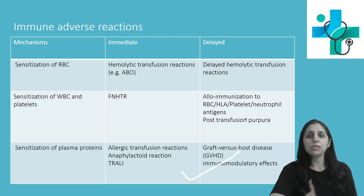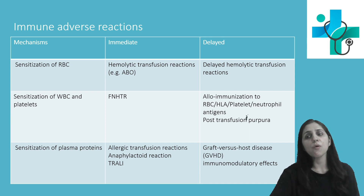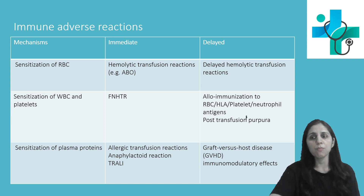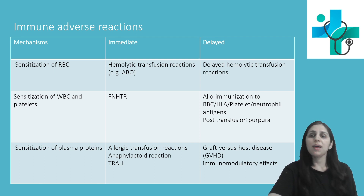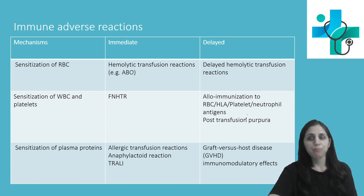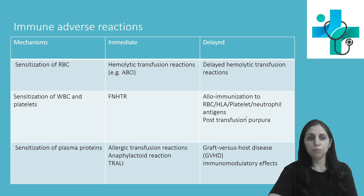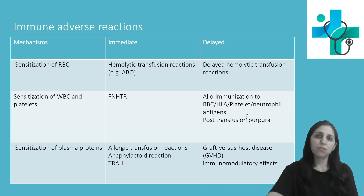Graft versus host disease is rarely seen but is fatal and more commonly seen in immunocompromised recipients. It occurs due to HLA similarity between the transfusion donor and recipient, and a number of transfused T lymphocytes having the capability of multiplying and engrafting. The patient presents with pancytopenia and bleeding or infectious complications. Immunomodulatory effects — most commonly immunosuppressive effects — are also seen.